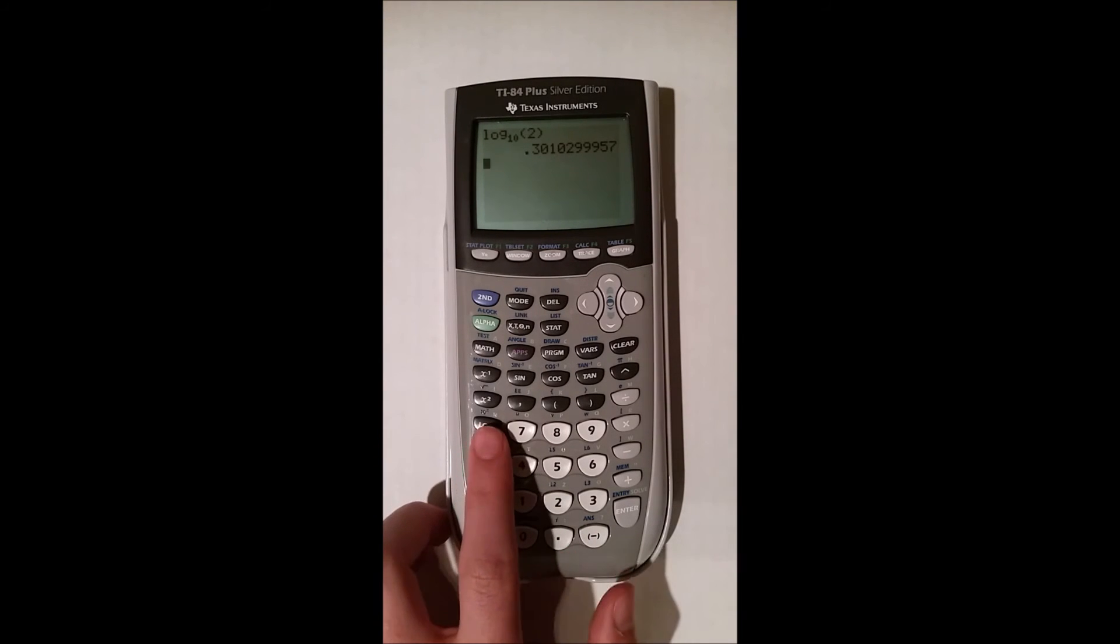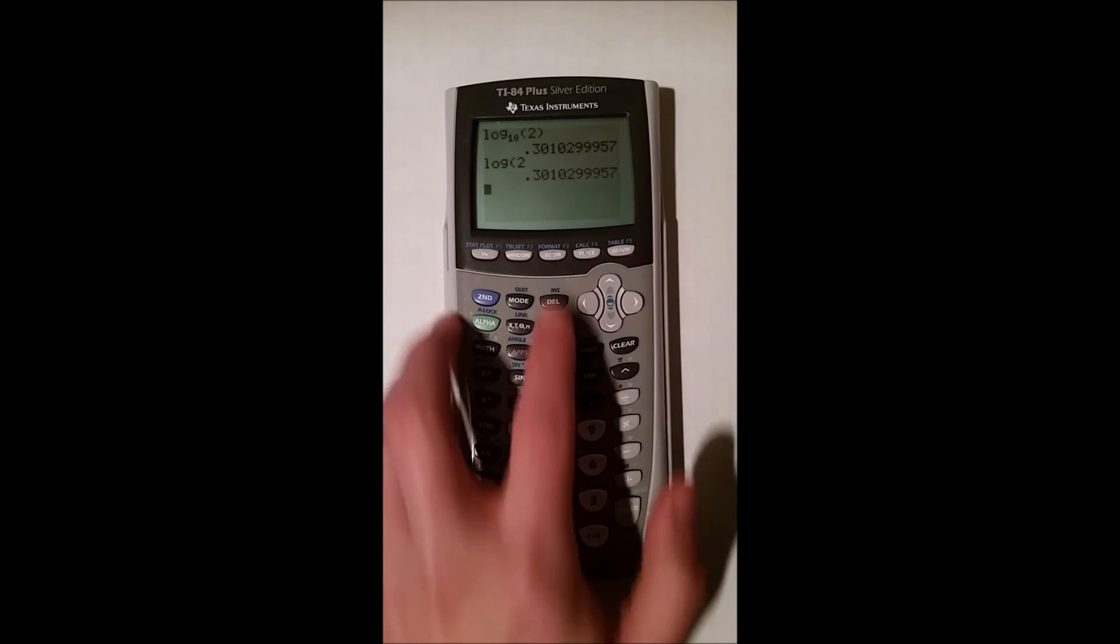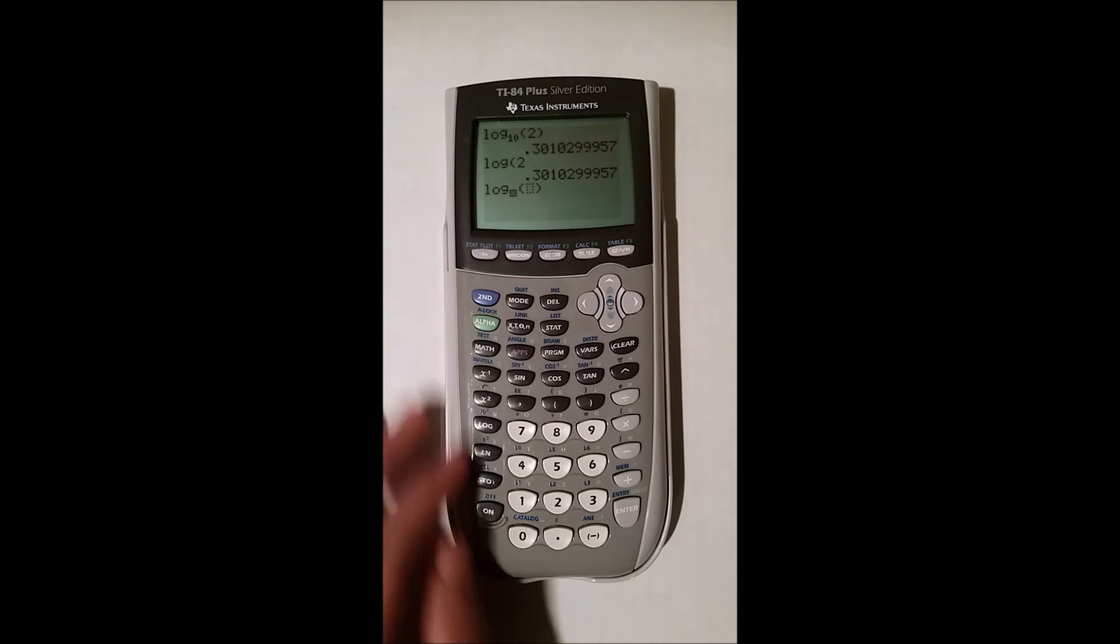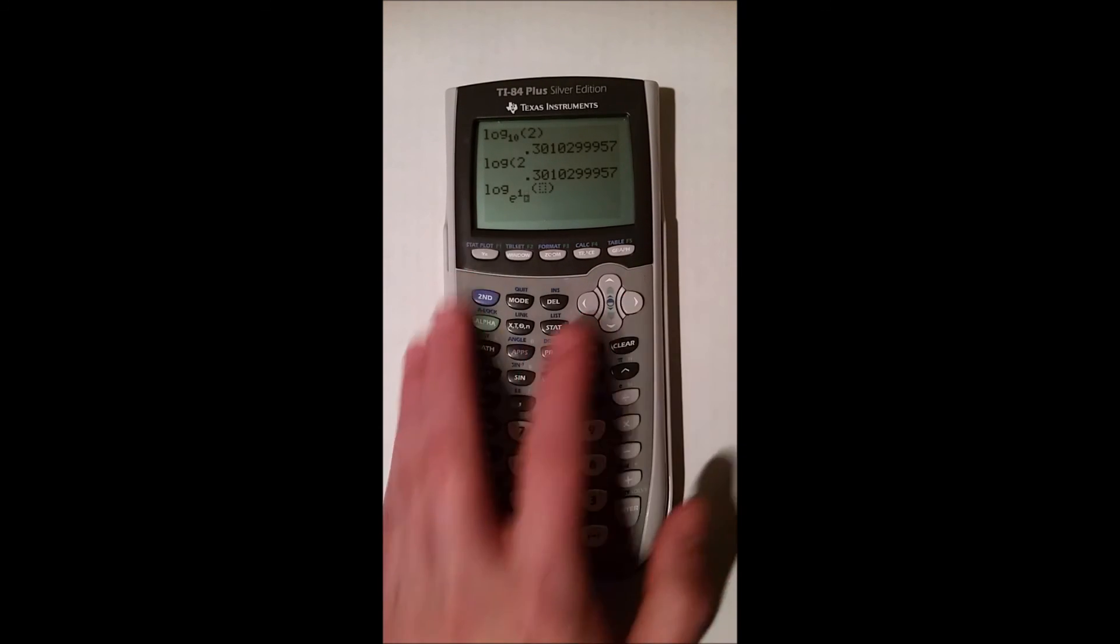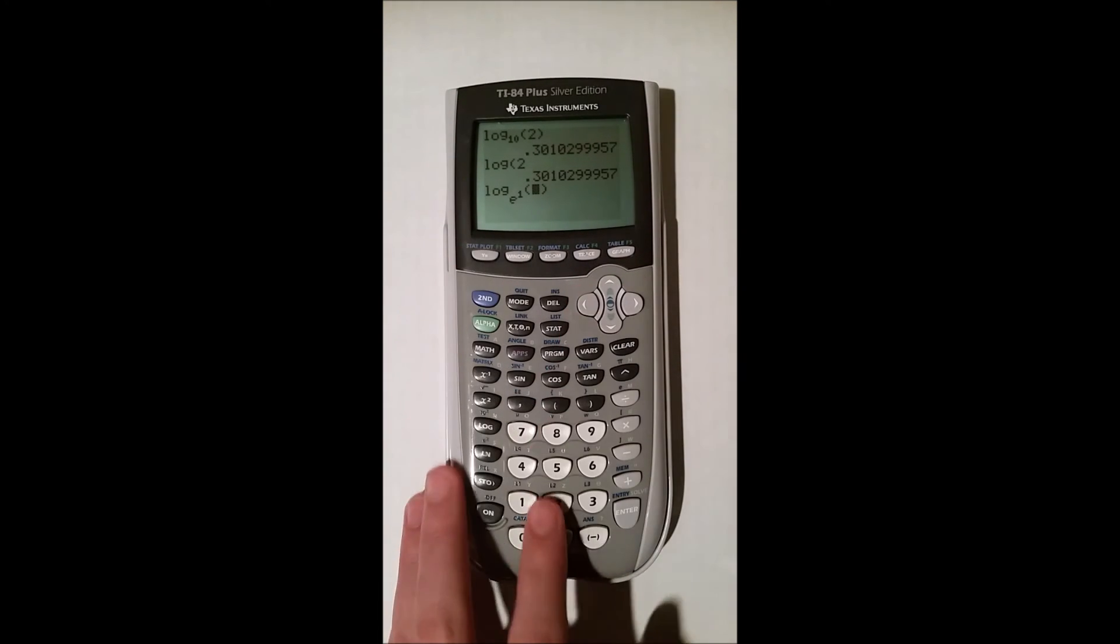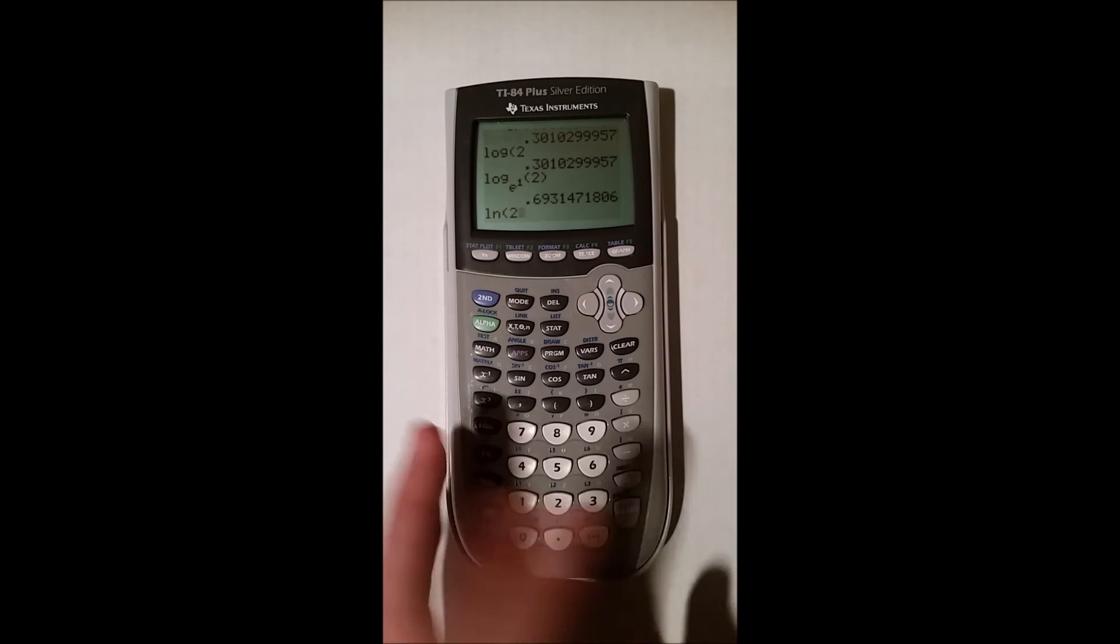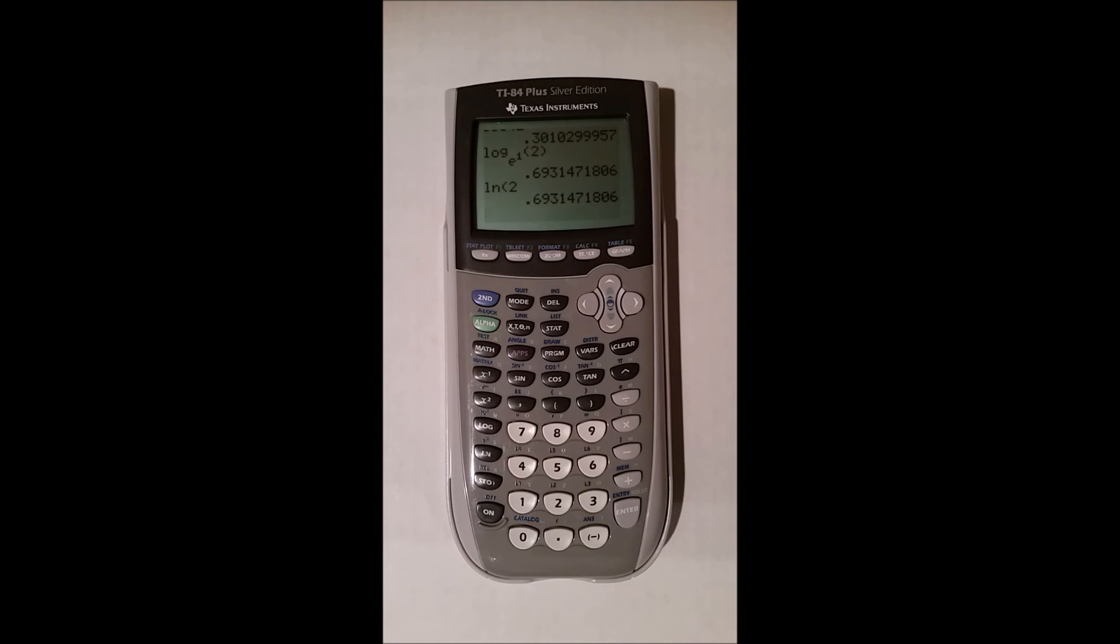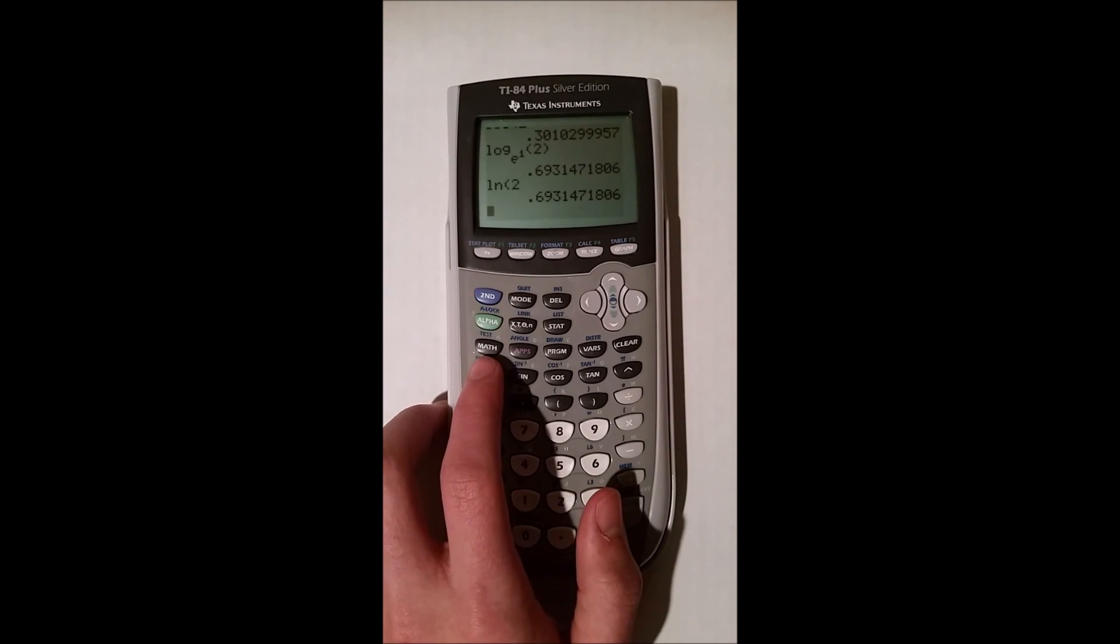And just to show you that this log is base 10, I'm going to hit that and do 2. And you see, you get the same number and same here. If I do log base E of 2, it gives me that number. And then ln 2 is that number. So as you can see, log base 10 and log base E are these two buttons. And you know how to get to the third one through the math button.